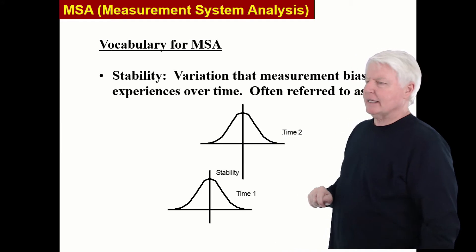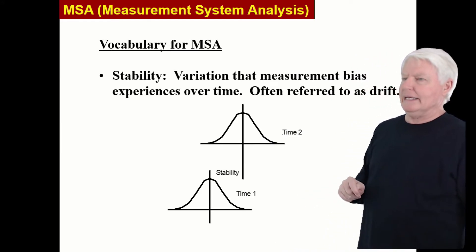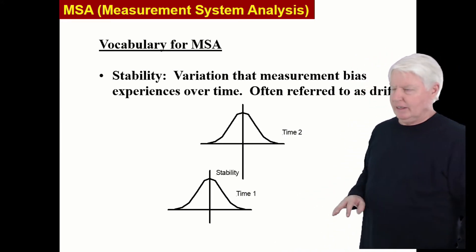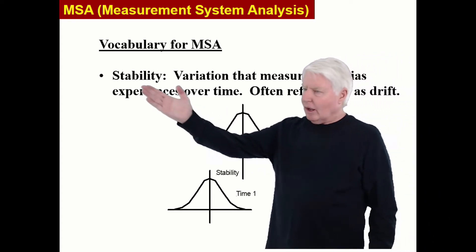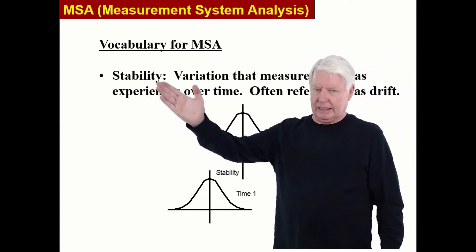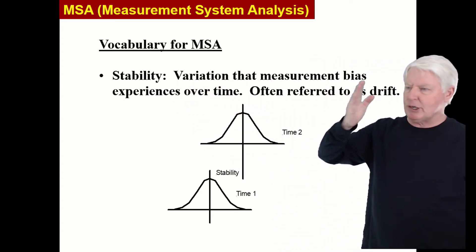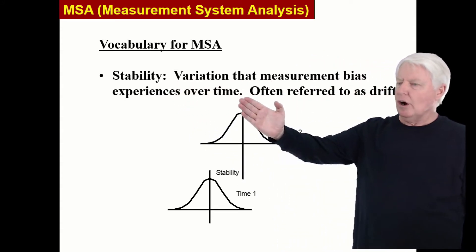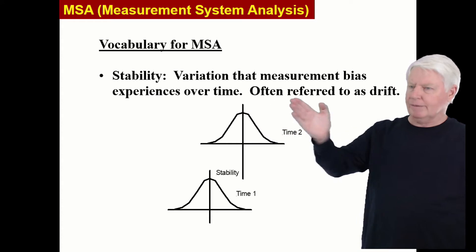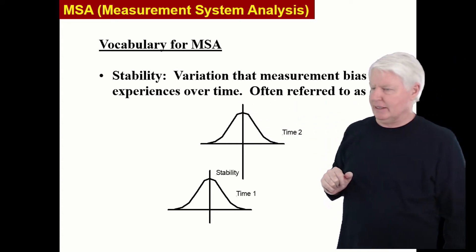Now back to the question, what is measurement drift? You can also call it instrument stability. It's variation that measurement bias experiences over time, often referred to as drift.